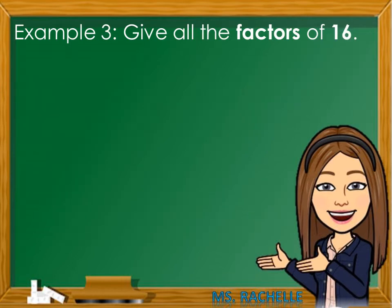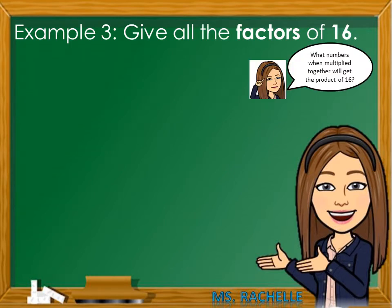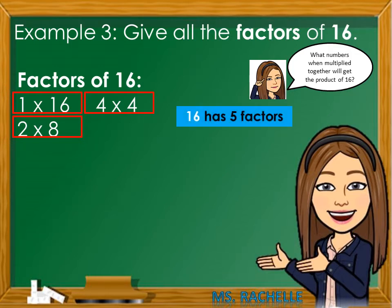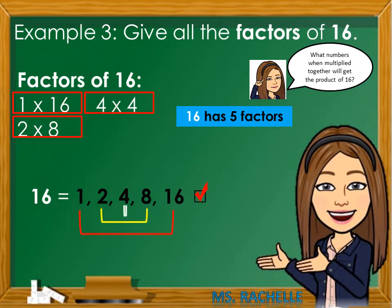Example number 3: Give all the factors of 16. Think, what numbers when multiplied together will get the product of 16? The factors of 16 are 1 times 16, 2 times 8, 4 times 4. These are the only possible combinations to get the product of 16. Notice that 16 has 5 factors: 1, 2, 4, 8, and 16.